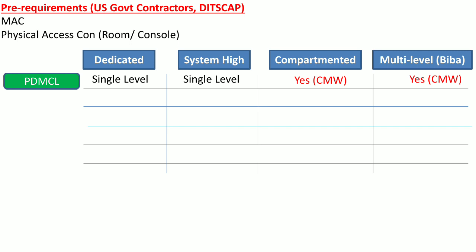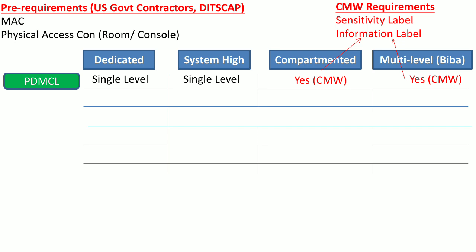CMW stands for compartmented mode workstations. The requirements for compartmented workstations are related to the security labels of the data or object being processed by the system. The CMW requirement states that the data should have two labels: one is the sensitivity label, which indicates the level of protection required by the data, and the second is the information label, which is an additional piece of information to avoid over-classification of the data or object.